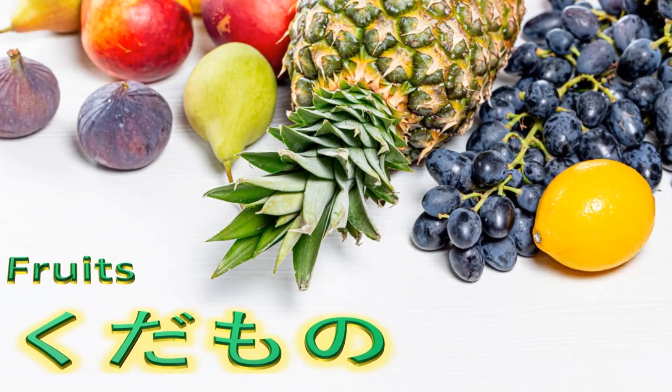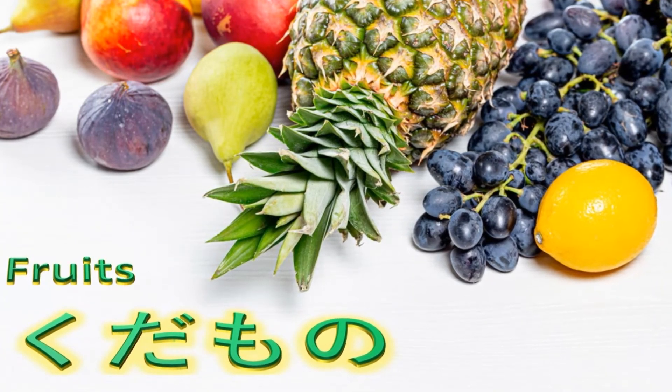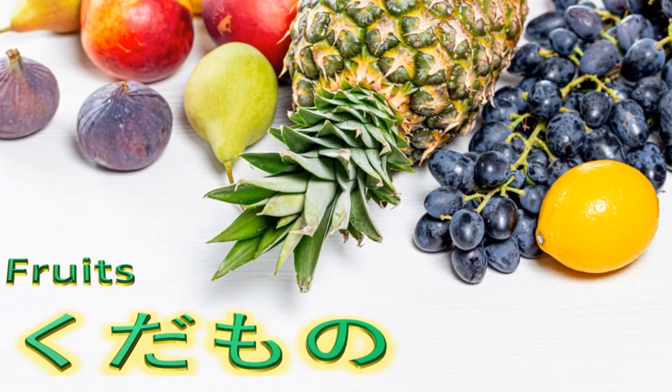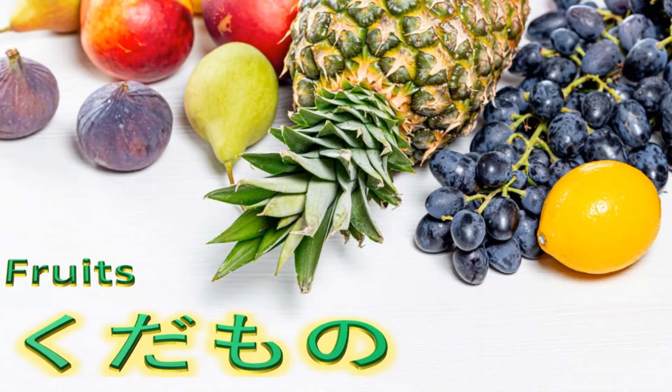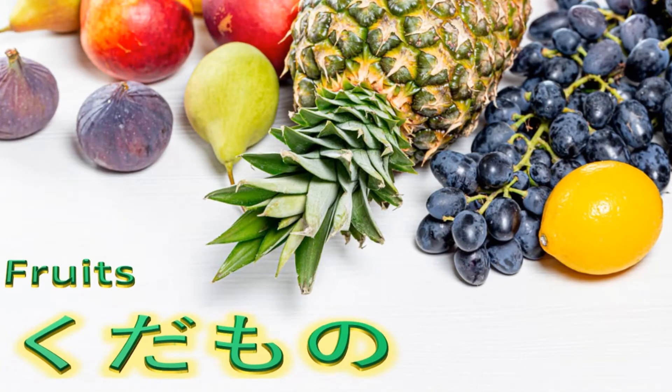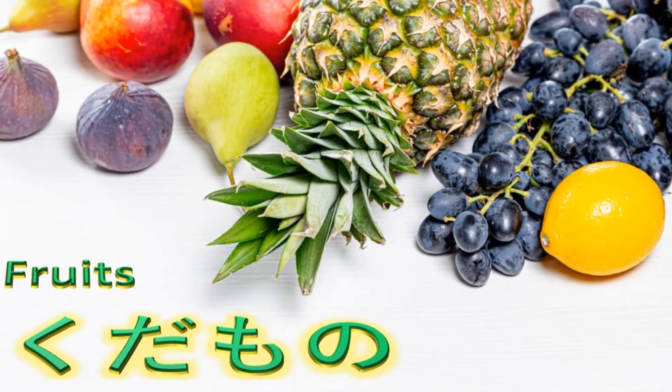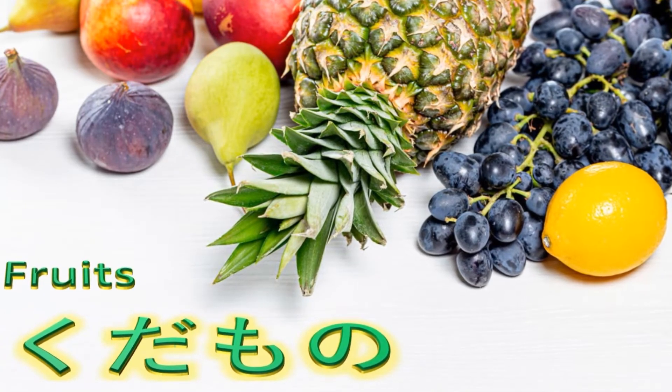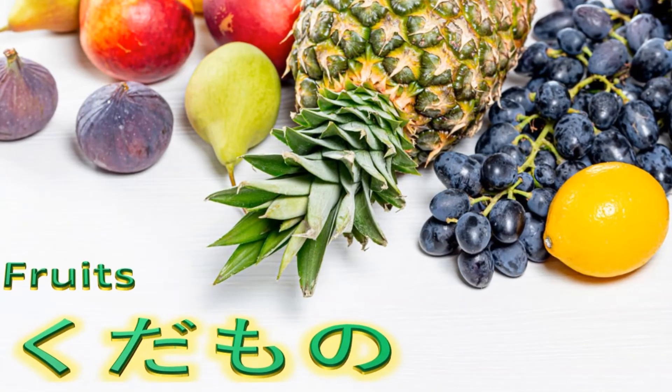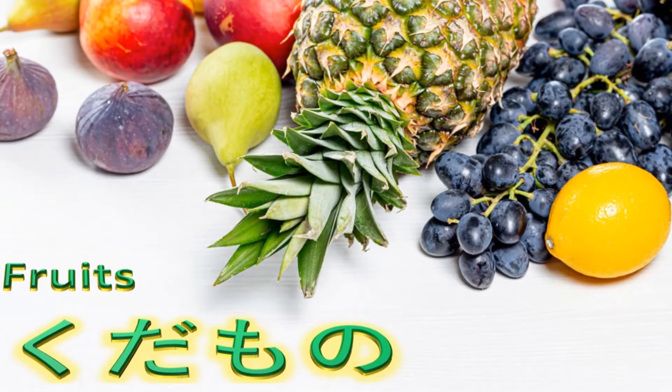How to say different fruits in Japanese? Fruits — Kudamono.